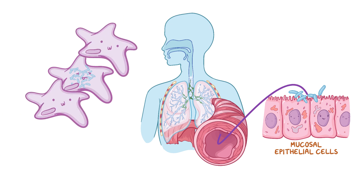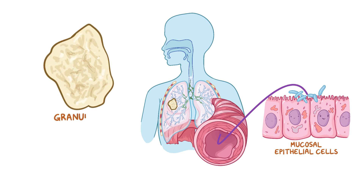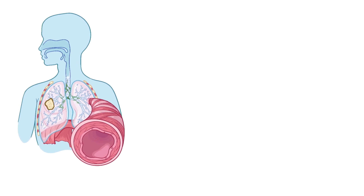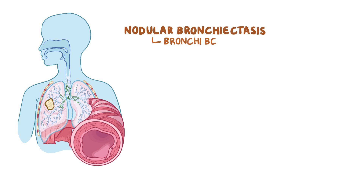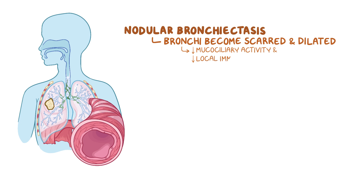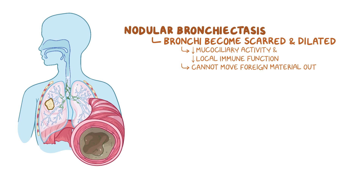When these mycobacteria multiply, they can cause inflammation, and this attracts more macrophages to the area. They try to quarantine the invaders by forming granulomas, and as these grow bigger, they form nodules. Eventually, this leads to nodular bronchiectasis, and the inflammation causes damage to the bronchi, which become scarred and dilated. The damaged bronchi have diminished mucociliary activity as well as decreased local immune function, and thereby lose their ability to move foreign material out of the lungs. So mucus can collect in these dilated areas, making it the perfect environment for bacterial growth.